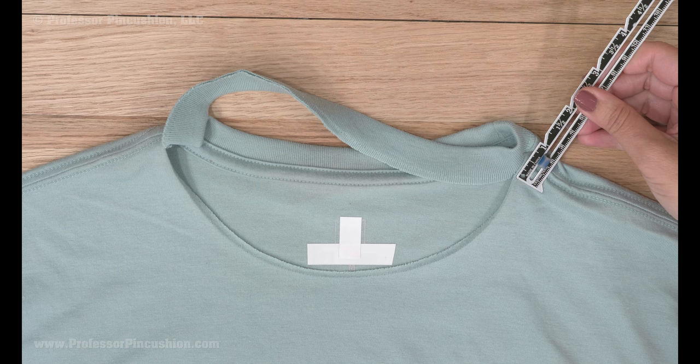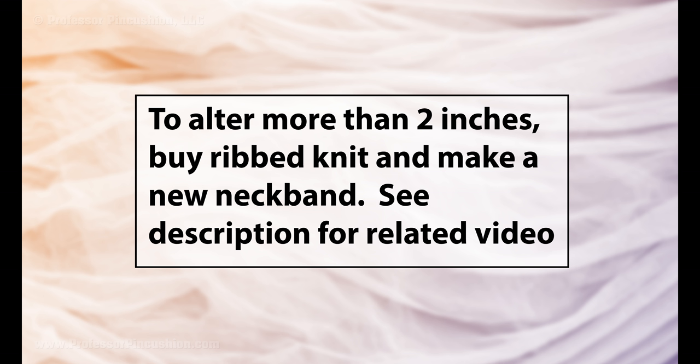If you want to do a more extreme v, more than two inches, you'll have to remove the whole neckband and purchase new rib knit to make your own to fit a longer neckline length.